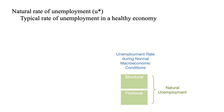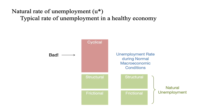Frictional unemployment will always exist, and we also know a healthy economy is one that innovates and therefore experiences creative destruction, so structural unemployment will always be part of the economy. U-star is what we call it — the natural rate of unemployment — and this is the amount of unemployment that will always exist. If we have an unemployment rate that is higher than U-star, then we know we have cyclical unemployment. Let's look at this hypothetical graph.